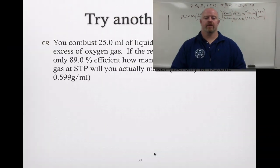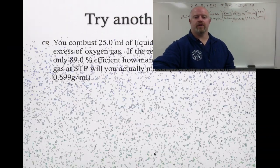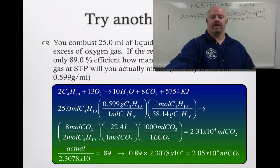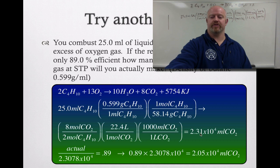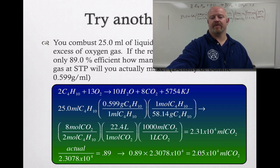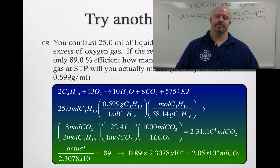So if we go back to the screen, then we can see all the work laid out and we have our 2.31 times 10 to the 4th milliliters that we should use. We actually use the unrounded number to solve for the actual what we made, to get times 0.89, and we actually will get 2.05 times 10 to the 4th milliliters.